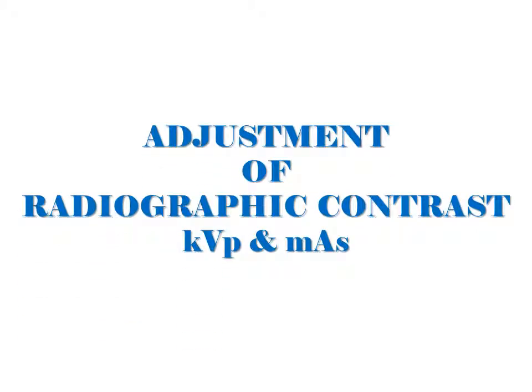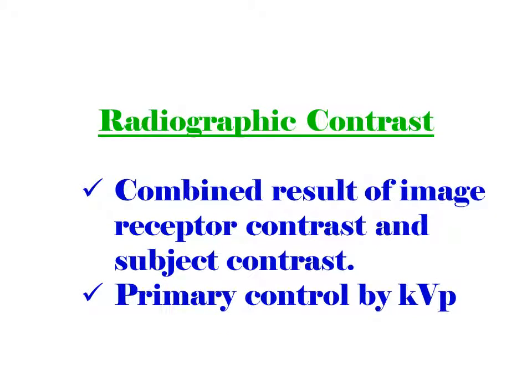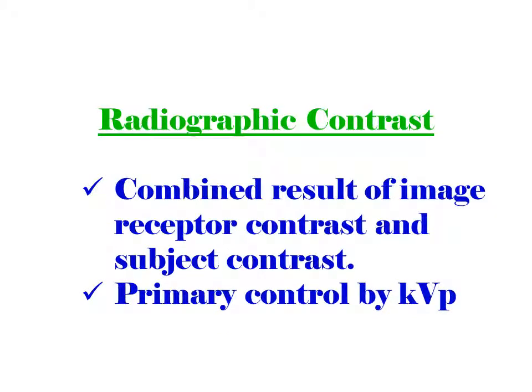Adjustment of radiographic contrast involving KVP and MAS. Radiographic contrast combines the result of image receptor contrast and subject contrast, with primary control by KVP and influence by MAS.